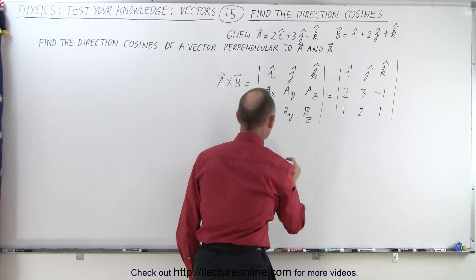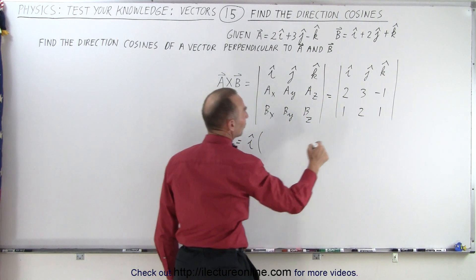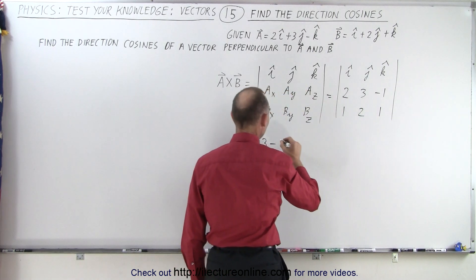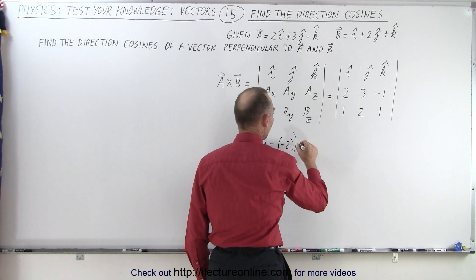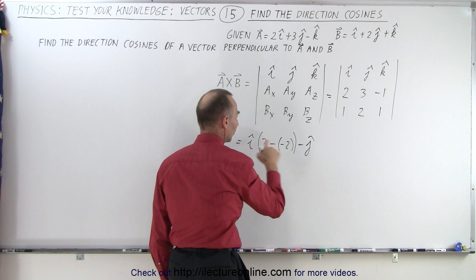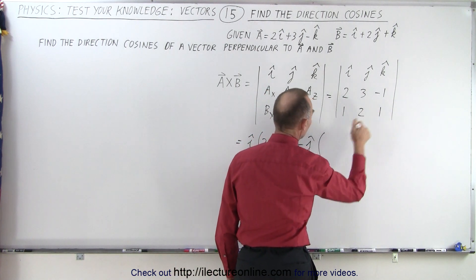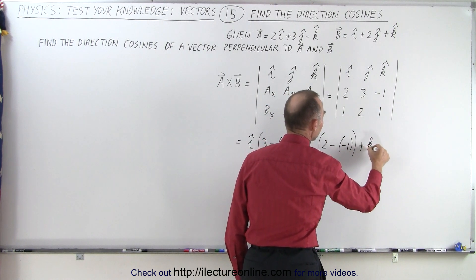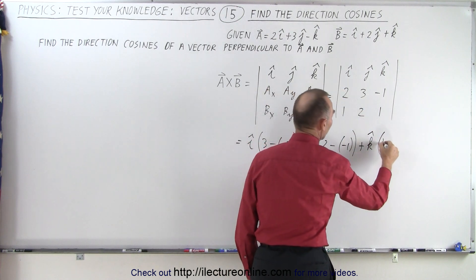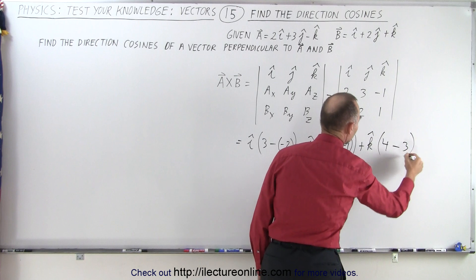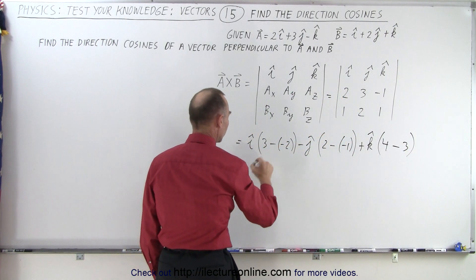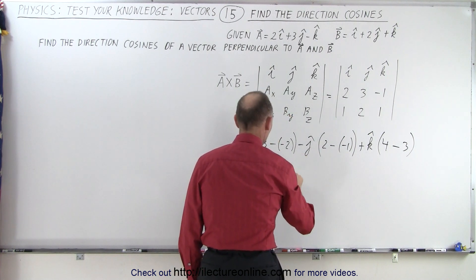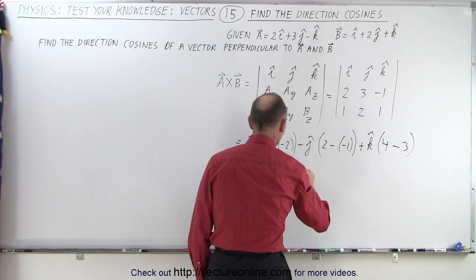Working that out: this equals i times (3×1) which is 3, minus 2 times (−1), minus j — because we alternate signs plus, minus, plus — times (2×1 − 1×(−1)), plus k times (2×2 − 3×1). Reducing: that gives 5i, then 2 minus (−1) is 3 so minus 3j, and 4 minus 3 is 1 so plus 1k.